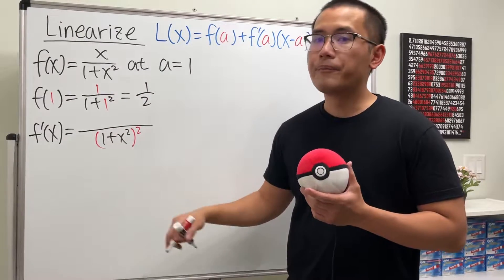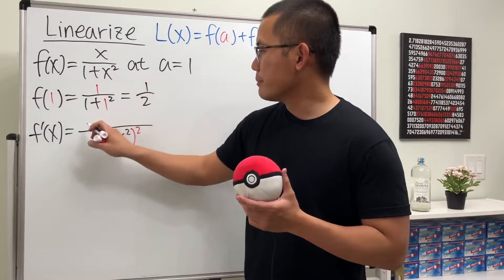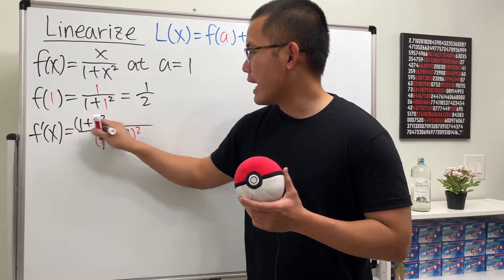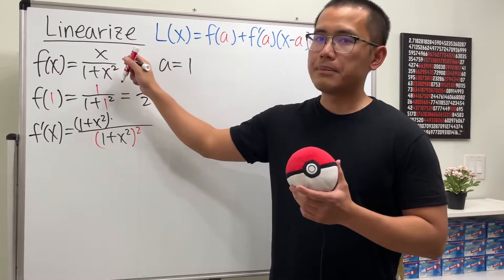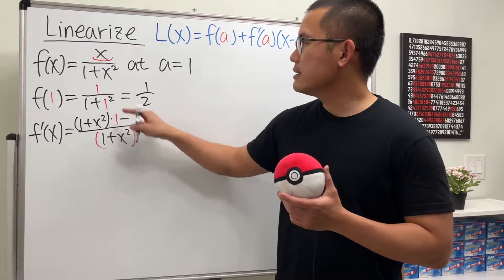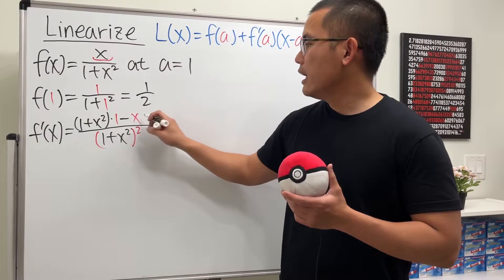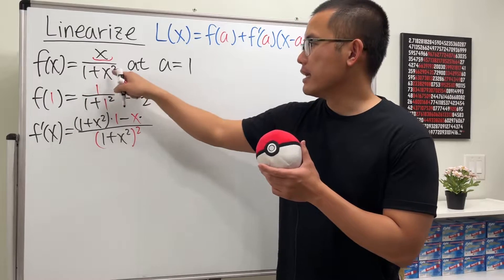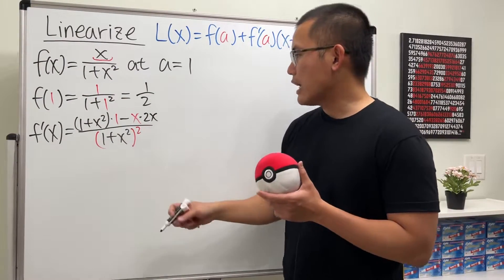All right, square the denominator. And we will just write down the bottom right here, which is 1 plus x squared. And we multiply this by the derivative of the top. The derivative of x is just equal to 1. And then continue, we minus the top function, which is x. And we multiply by the derivative of the bottom. Derivative of 1 plus x squared is 2x. So, that's all we have.